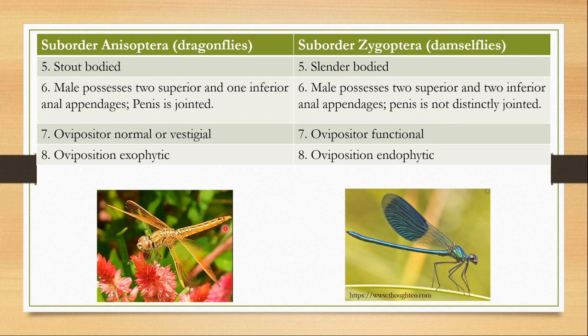The ovipositor is normal or vestigial in dragonflies and oviposition is exophytic — eggs are laid into the water. In damselflies, the ovipositors are functional and are used to insert eggs inside aquatic plants, making their oviposition endophytic.